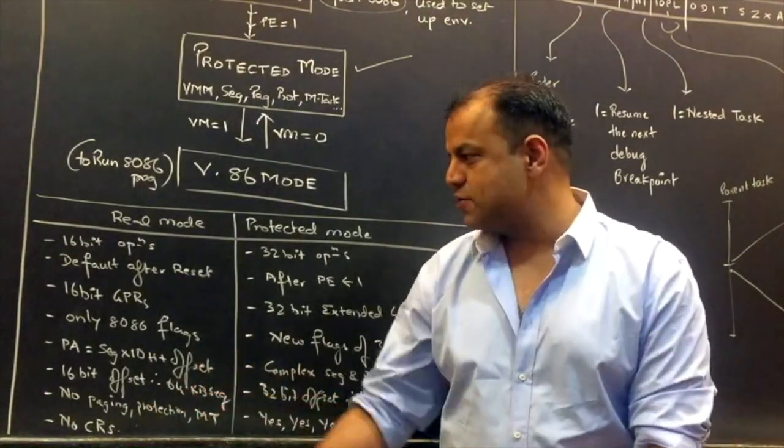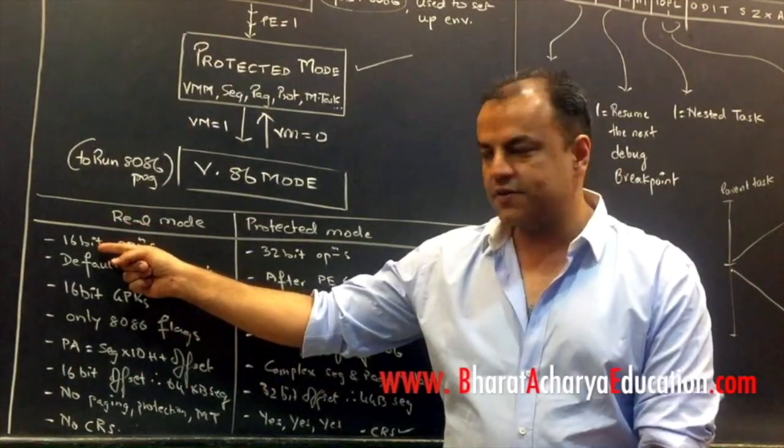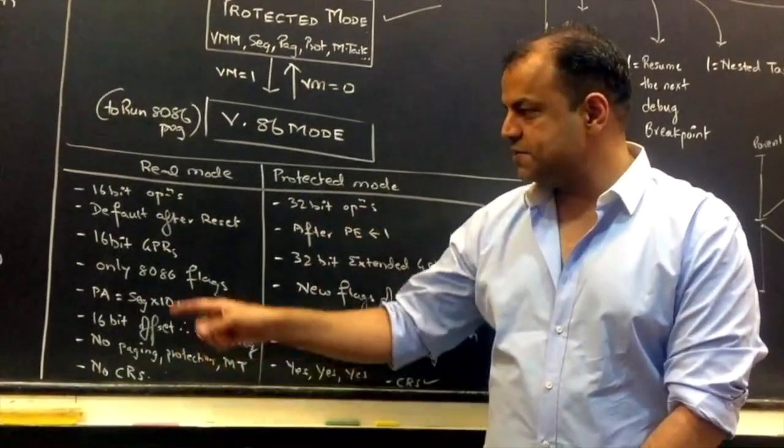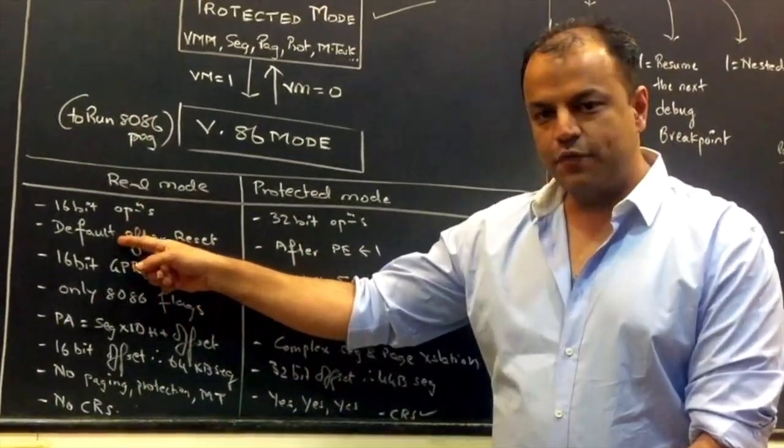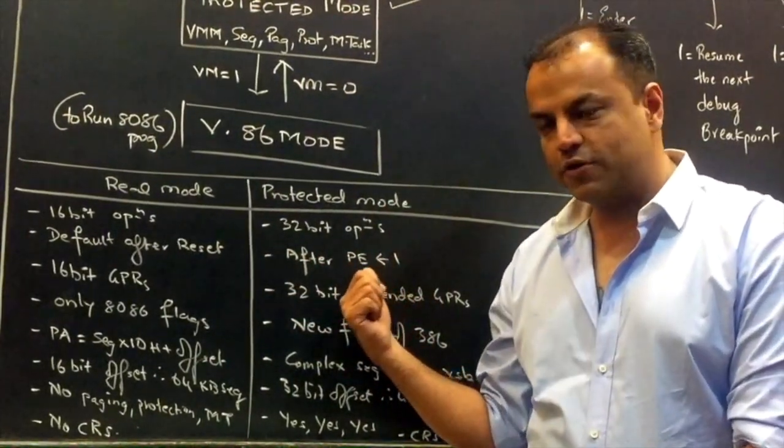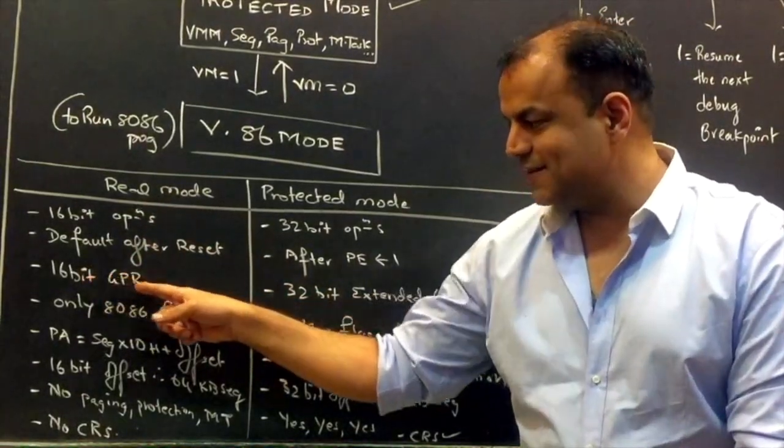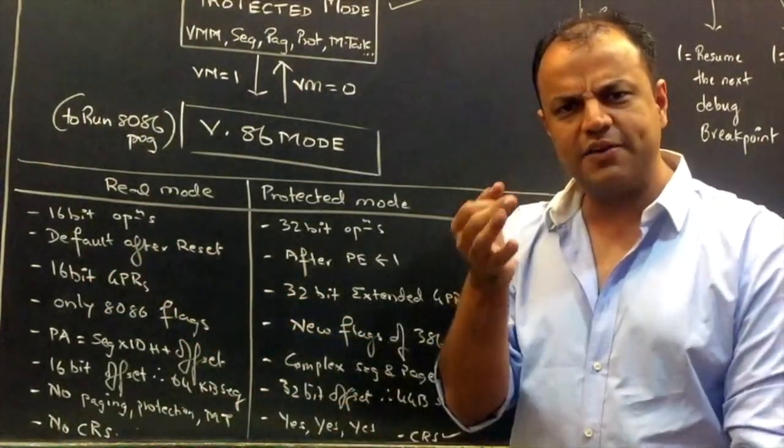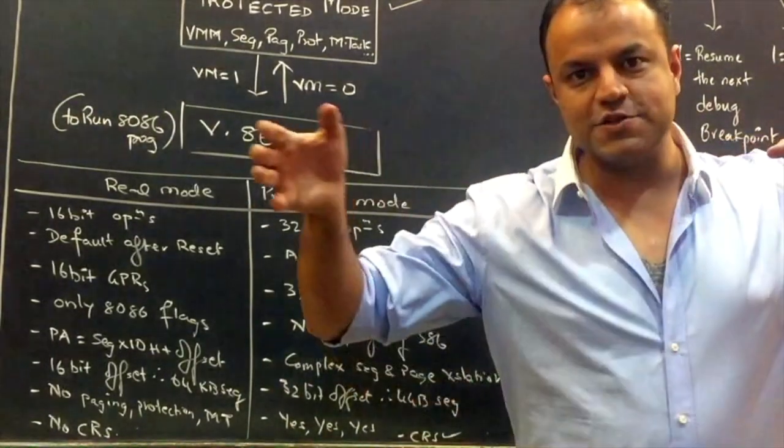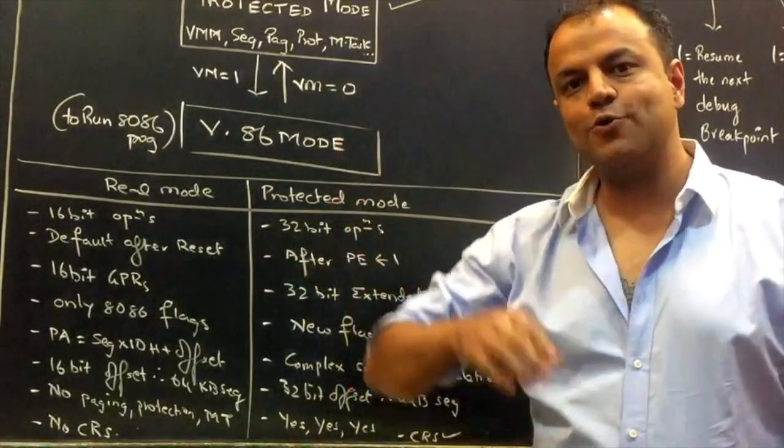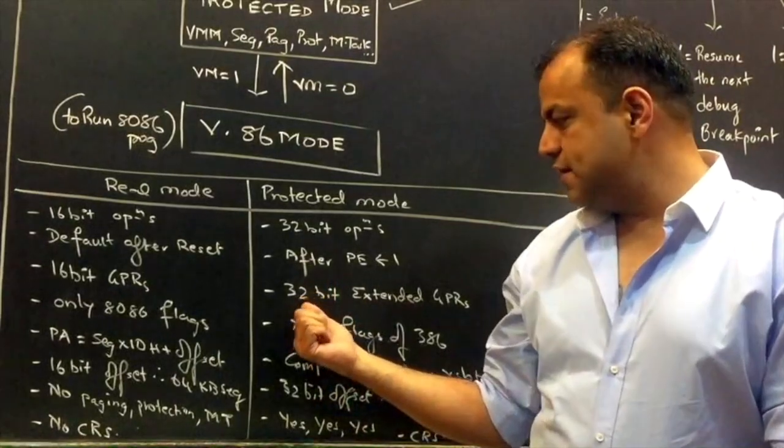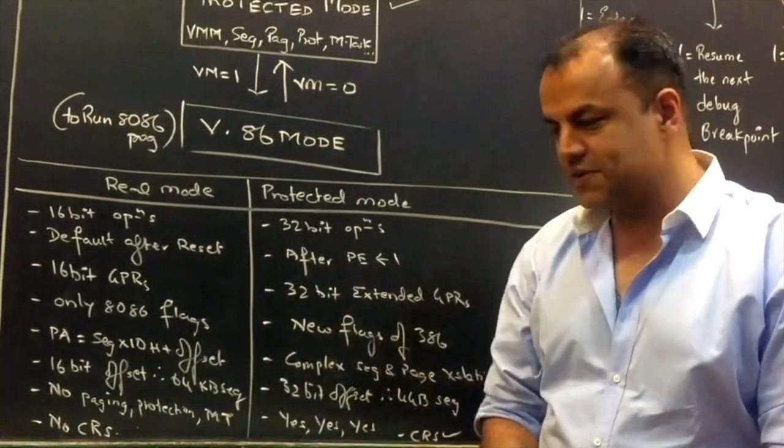It's two whole processors that you're comparing. In real mode, it works like an 8086. So, it'll do 16-bit operations. 32-bit operations is not allowed. In protected mode, it'll do 32-bit operations. Real mode is the default mode after reset. Protected mode has to be entered by making PE bit 1. It's not the default mode. In real mode, there are 16-bit general purpose registers. Remember AX, BX, CX, DX? They were 16-bit registers. In protected mode, those registers expand into 32-bit registers. They're called EAX, EBX. E stands for extended. So, in real mode, the registers are 16-bits. In protected mode, the registers are 32-bits.